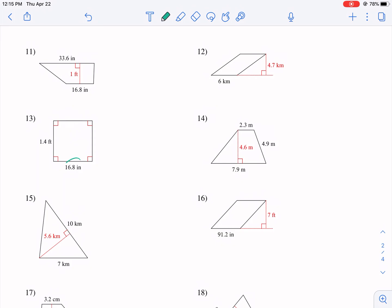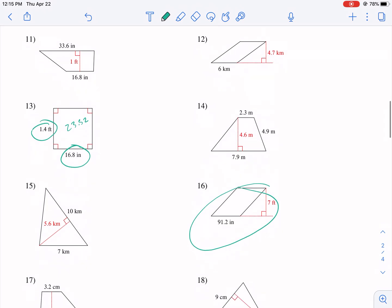This, again, we're going to multiply these two sides together. So 16.8 times 1.4. You get 23.52. Those are the easy ones. Ones like these are easy because you just multiply the two dimensions. So 7 times 91.2. I forgot to write squared.